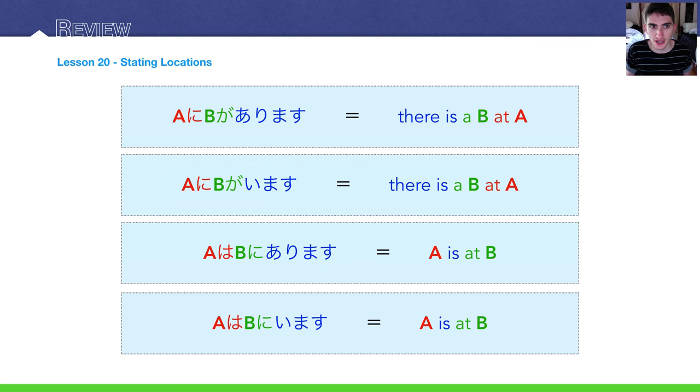Lesson 20, stating locations. You can state, taking this idea of ga arimasu, there exists something, you can state where exactly it exists using ni. A ni B ga arimasu. There is a B at A. So, at A, there's a B exists there.